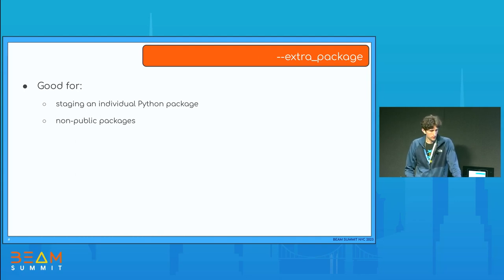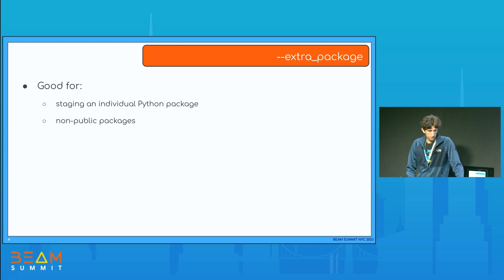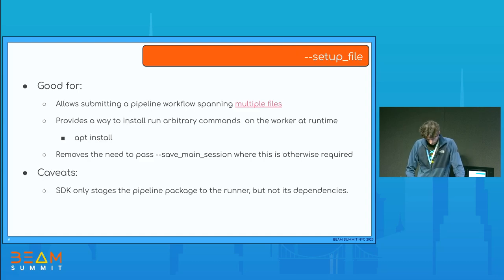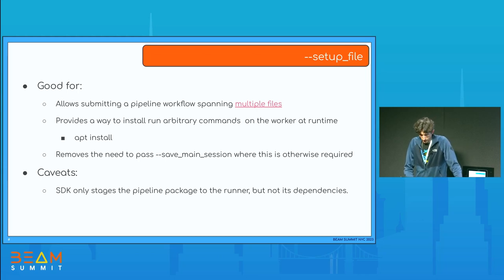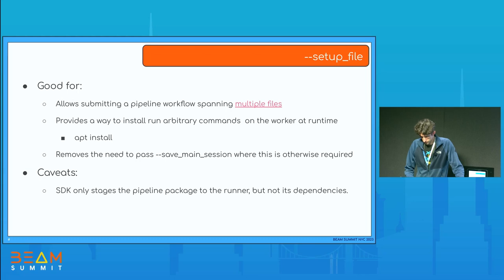The extra packages option allows you to stage one additional Python package to the workers, which works if you have a private library not available in PyPI but have a binary distribution available locally that you'd like to provision into your runtime environment. You can also configure your pipeline as a Python package and supply it using the setup file pipeline option. This works well if you have multiple files that comprise your workflow. You can configure your setup.py to run arbitrary commands on the worker at runtime — for example, installing Linux packages.